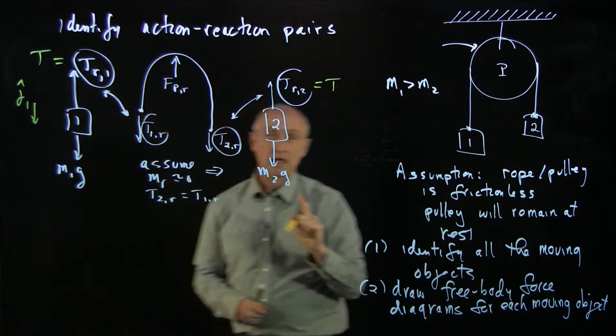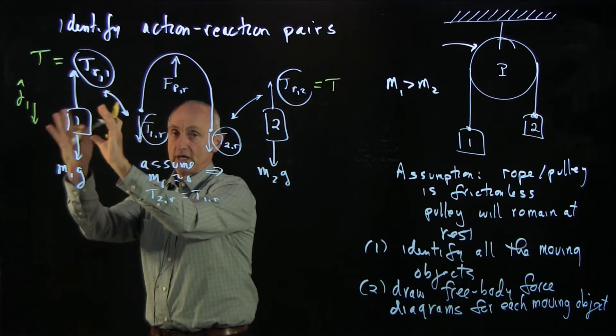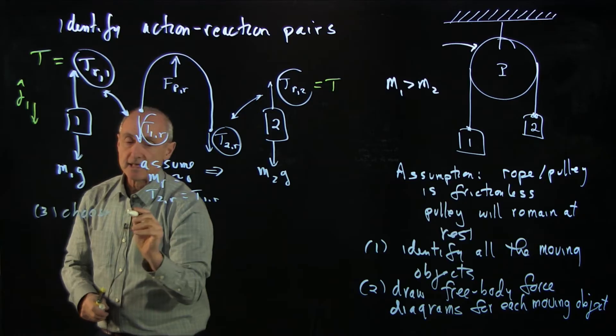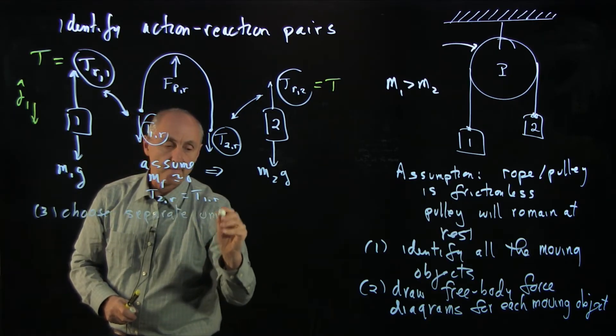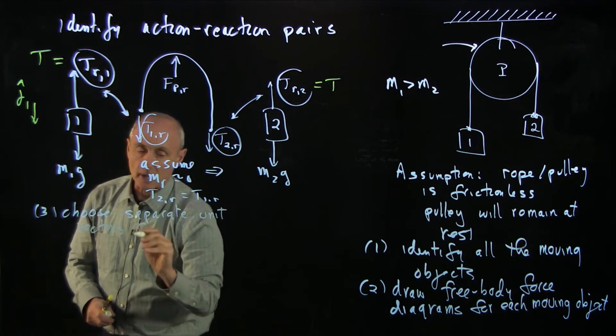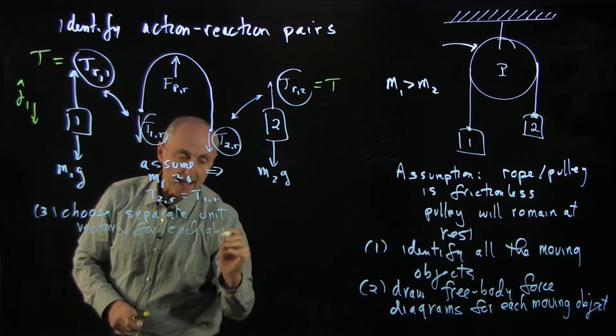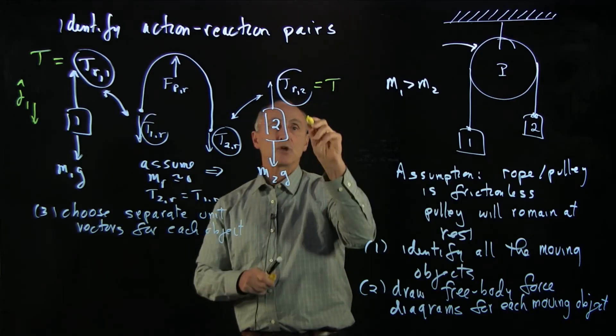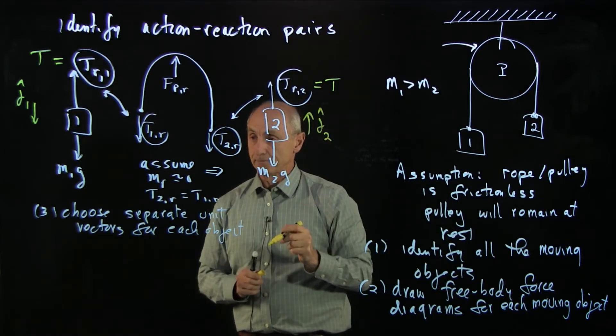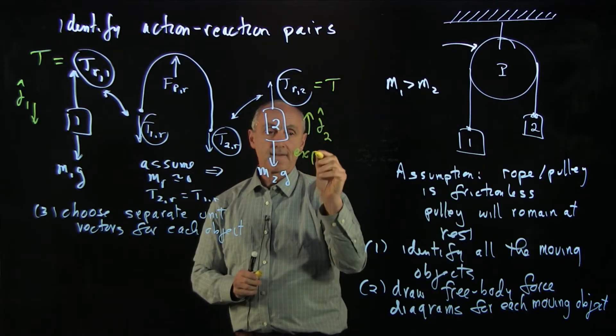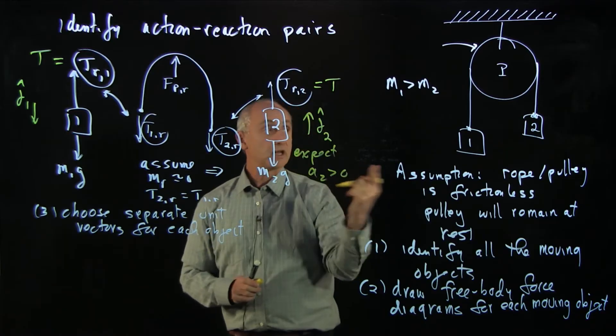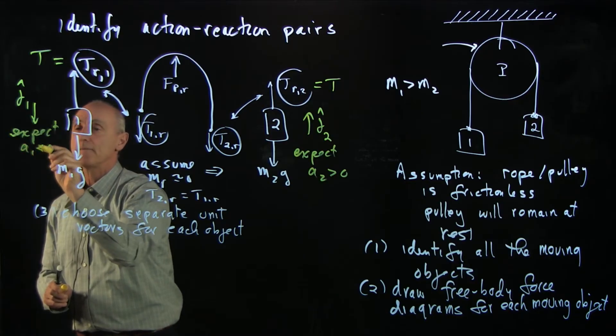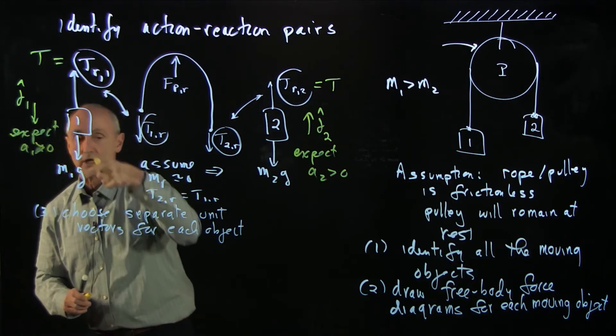I like to do this because it gives me a way to choose my unit vectors to make all the accelerations positive. When m1 is bigger than m2, I expect m1 to go down and 2 to go up. That's how I'm going to choose unit vectors j hat 1. Here is the very interesting thing. We choose a separate coordinate system for each object. We want to choose separate unit vectors for each object, and our accelerations will be with respect to those unit vectors.